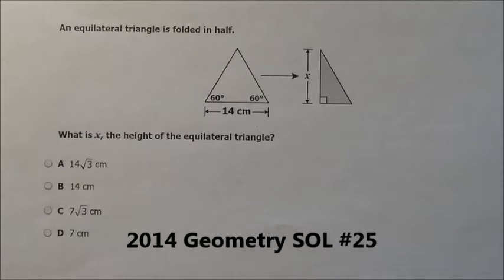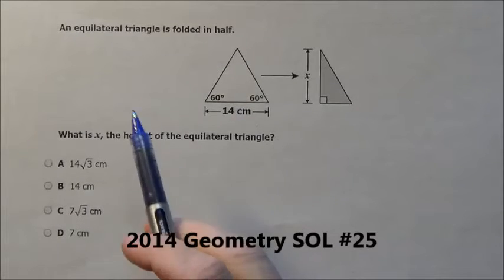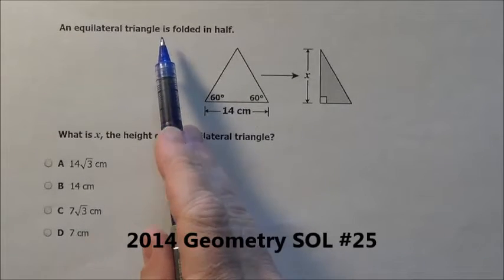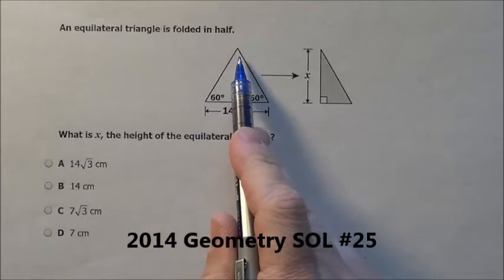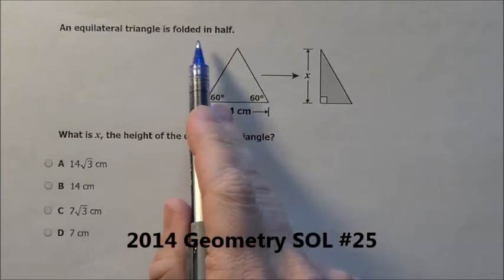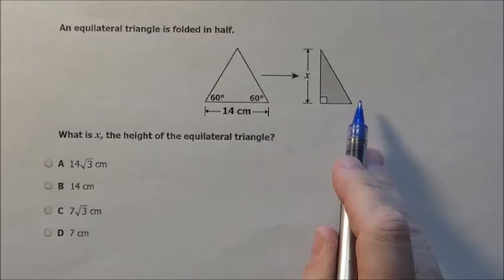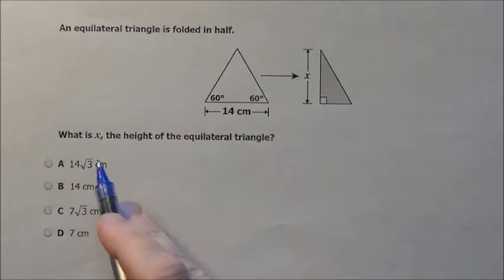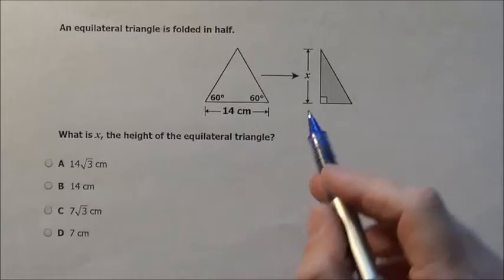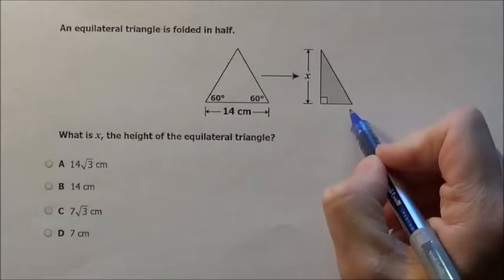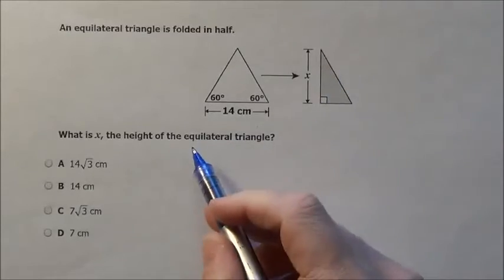Here's problem 25. It says an equilateral triangle — that means it's 60, 60, and 60 — is folded in half. So what is x, the height of the equilateral triangle?